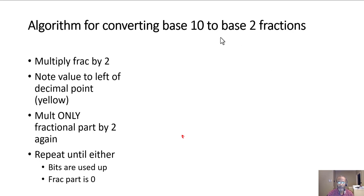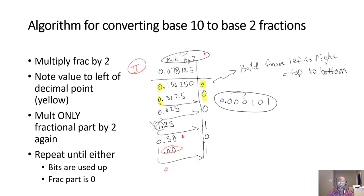In this example, we're going to take the number 0.078125 and look at how we convert that. So the algorithm looks like this: you take your base 10 fraction and you multiply it by 2.